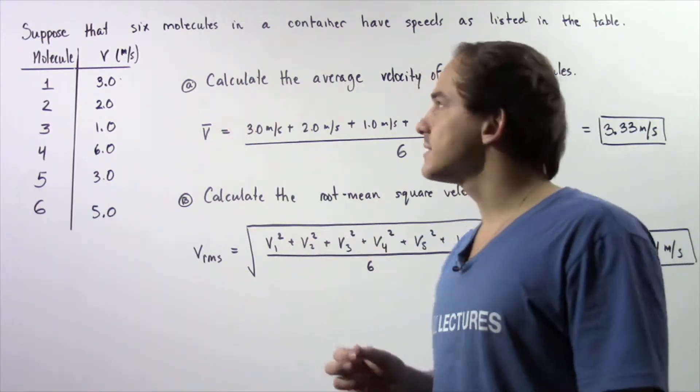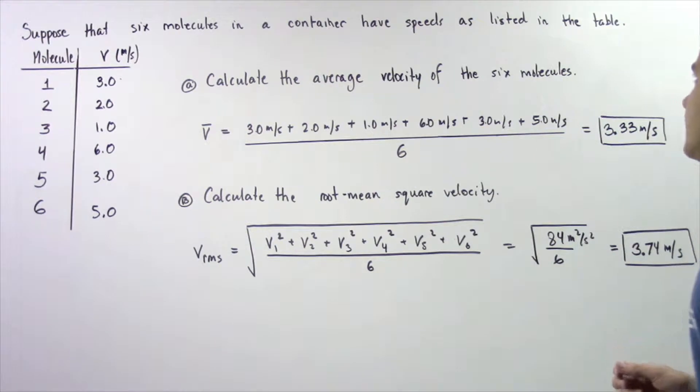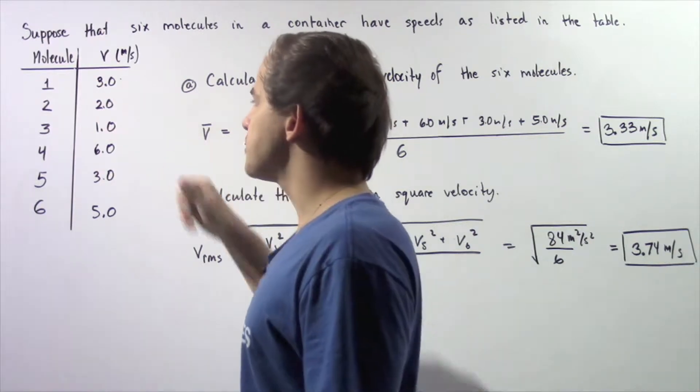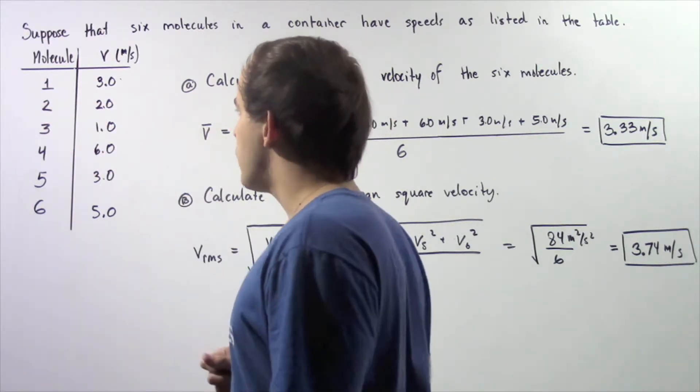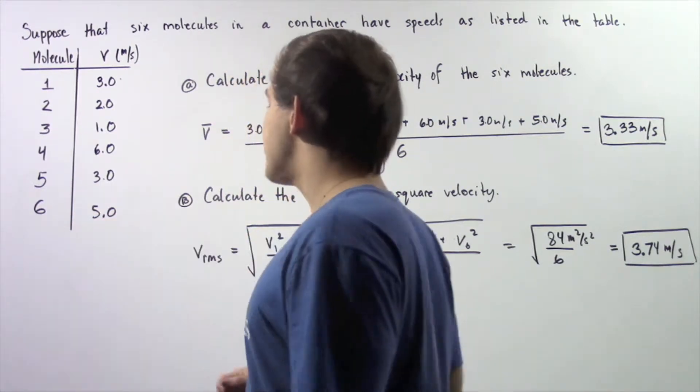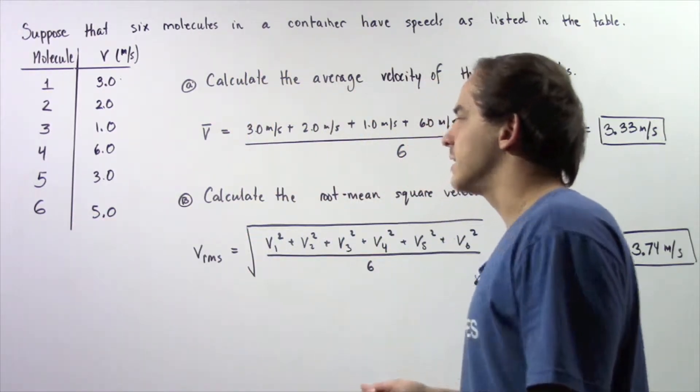Suppose that six molecules in a container have speeds as listed in the following table. Molecule 1 has a speed of 3 meters per second, molecule 2 has a speed of 2 meters per second, and all the way down to molecule 6 which has a speed of 5 meters per second.